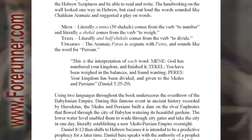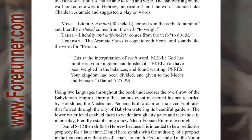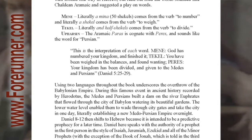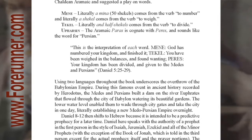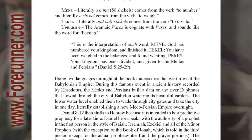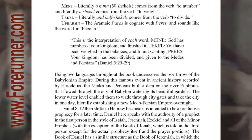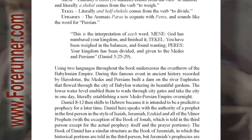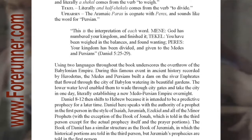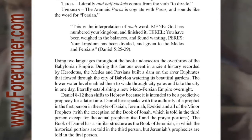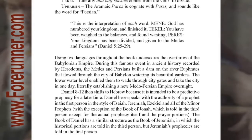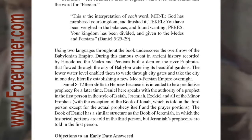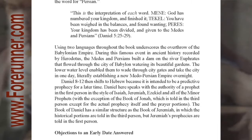Mene — literally a mina, 50 shekels — comes from the verb 'to number.' And literally a shekel comes from the verb 'to weigh.' Tekel, literally half shekels, comes from the verb 'to divide.' Upharsin: the Aramaic Paras is cognate with Paris and sounds like the word for Persian. This is the interpretation of each word: Mene — God has numbered your kingdom and finished it. Tekel — you have been weighed in the balances and found wanting. Perez — your kingdom has been divided and given to the Medes and Persians. Daniel 5:25-29.